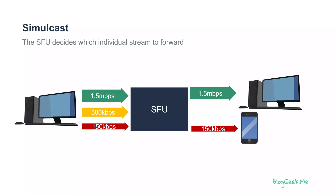When we use Simulcast in a multi-party call, the SFU is going to decide which individual stream to forward to which one of the participants. The sender itself is going to send multiple media streams — in our example here 3 — and our media server, the SFU, is going to decide which of these streams to send to which of the participants.